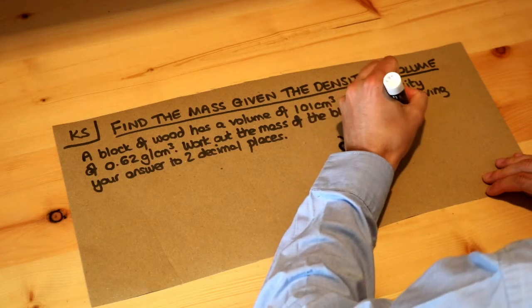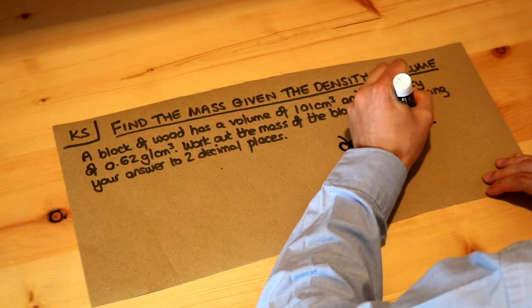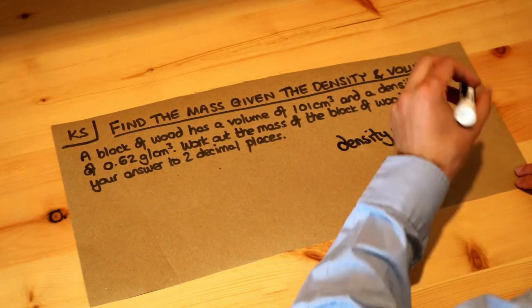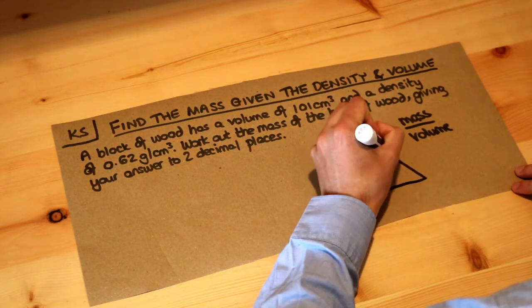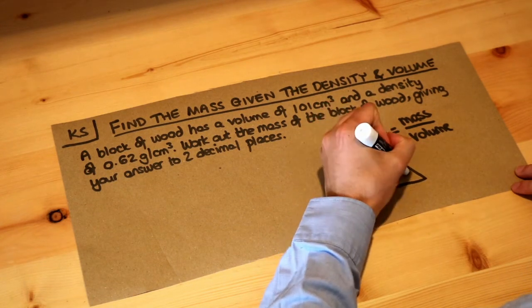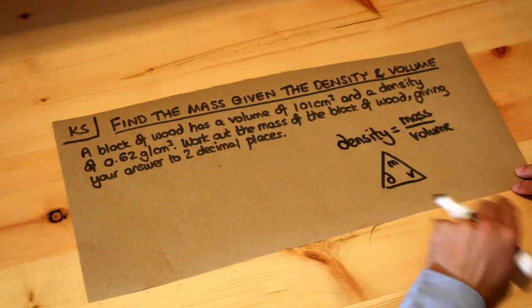We saw that density was the mass divided by the volume. Now we can actually turn this into a nice little triangle. Some teachers don't like the triangle, but I quite like it, and it works like this: density is mass over volume, so D, M, V in this order.